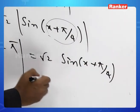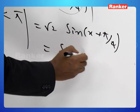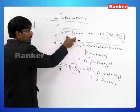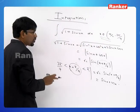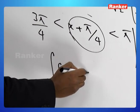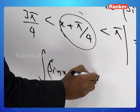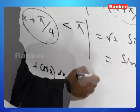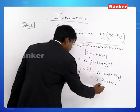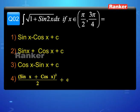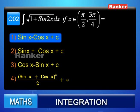In this domain the integrand behaves as sin x + cos x only, so we simply evaluate the integral of sin x + cos x. The integral of sin x is −cos x and the integral of cos x is sin x. Adding the integration constant c, the answer is sin x − cos x + c, which is clearly option 1.